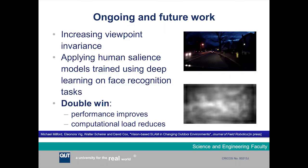We've been extending this work in a number of directions. First, attempting to deal with the very challenging problem of viewpoint invariance using a number of classical approaches. With our collaborators at Harvard University, we've been applying models of human visual attention to try and improve performance. Interestingly, if you use a model that predicts where humans look in a scene when performing a face recognition task, you can actually improve both the performance of your place recognition task and also reduce the computational load because you no longer have to process the entire image — a double win in terms of both performance and computational load.